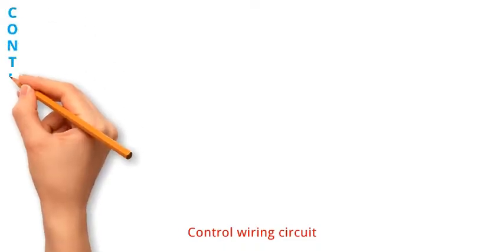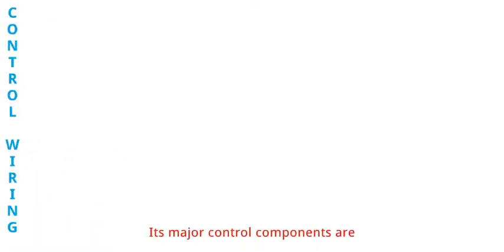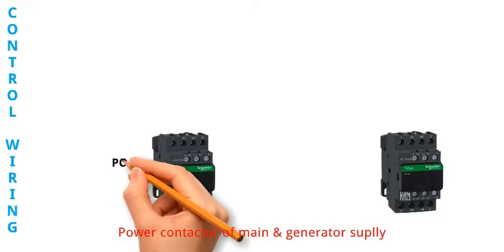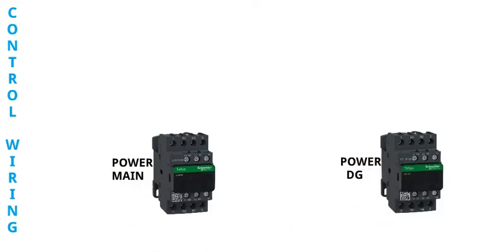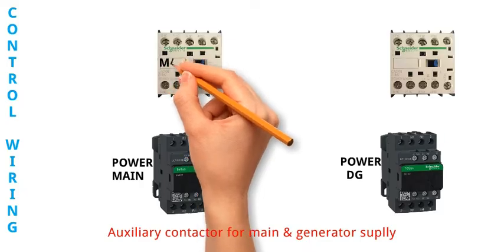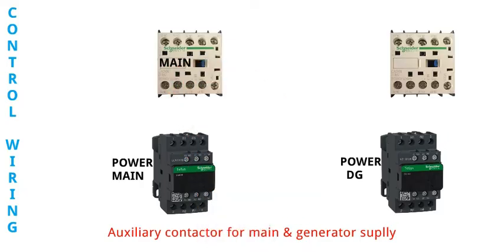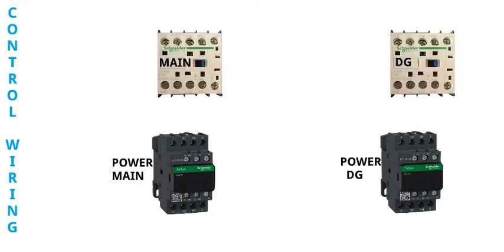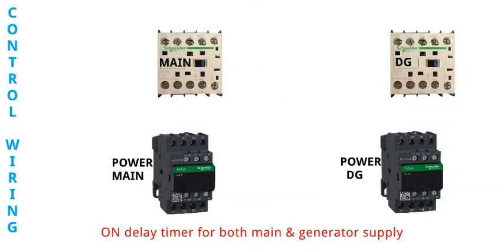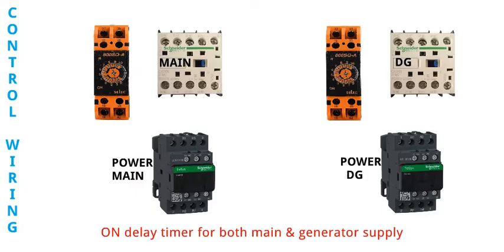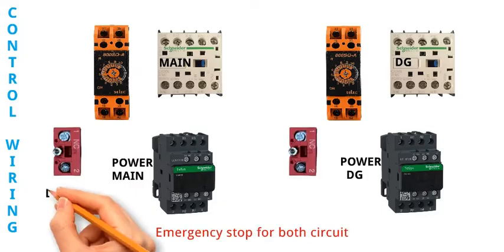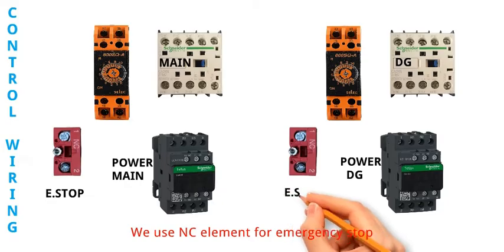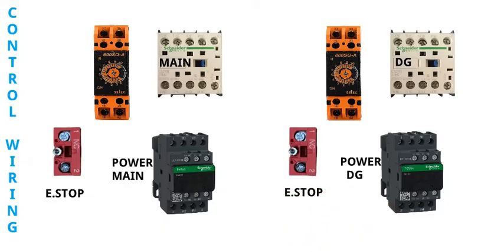Control wiring circuit. Its major control components are: power contactor of main and generator supply, auxiliary contactor for main and generator supply, on-delay timer for both main and generator supply, and emergency stop for both circuits. We use NC element for emergency stop.